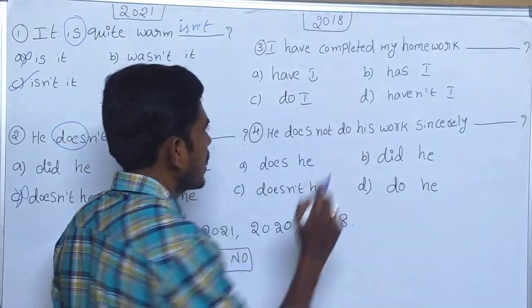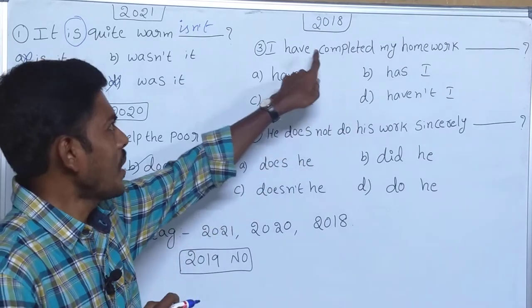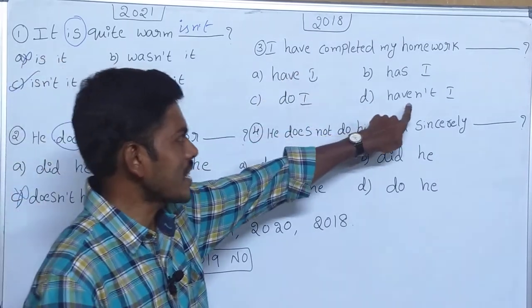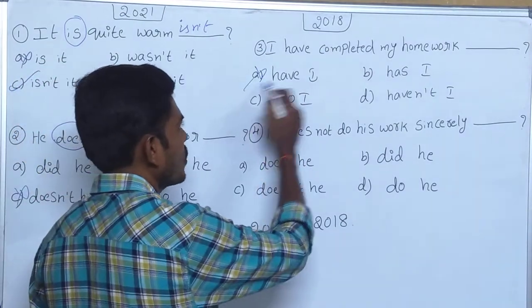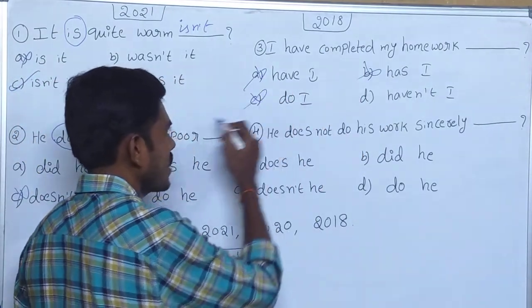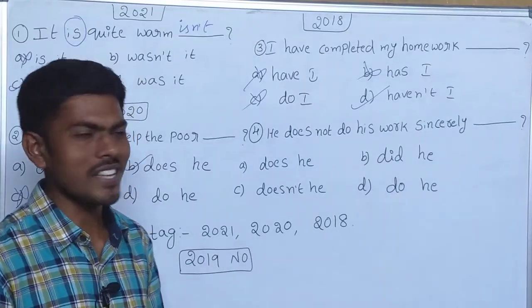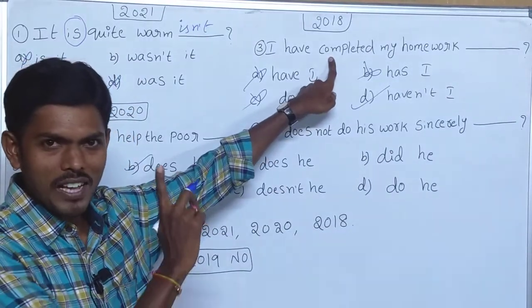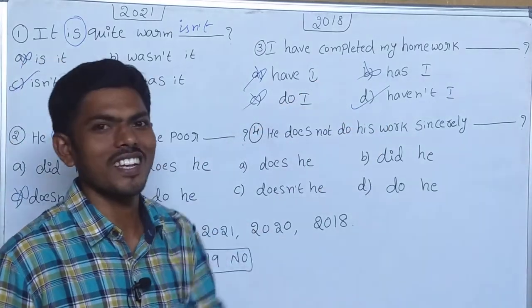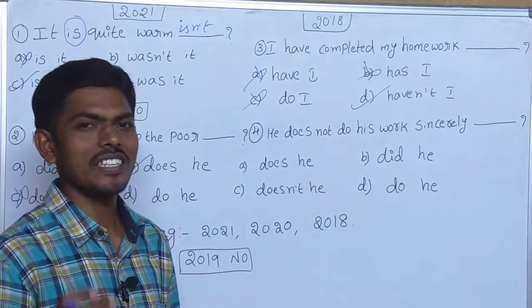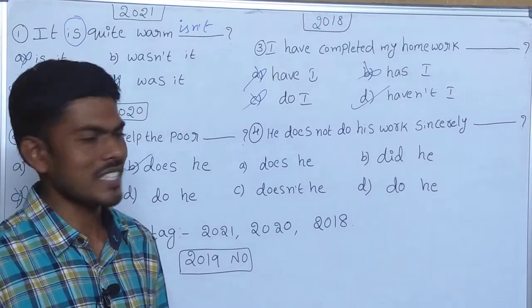See how easy this one is. It is positive, so our answer is negative — and only one option is negative. The remaining options are positive, so they are not the answer. This is our answer because when the sentence is positive, the negative tag is the answer. You can get marks very easily if you follow our PV English Academy classes.